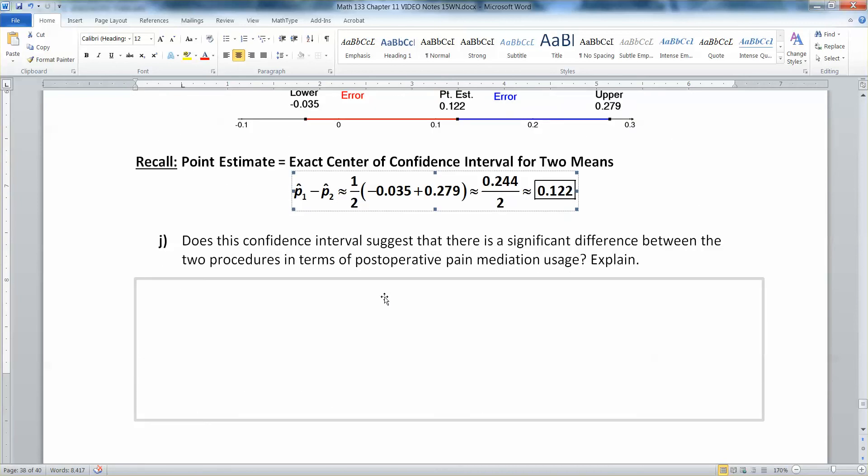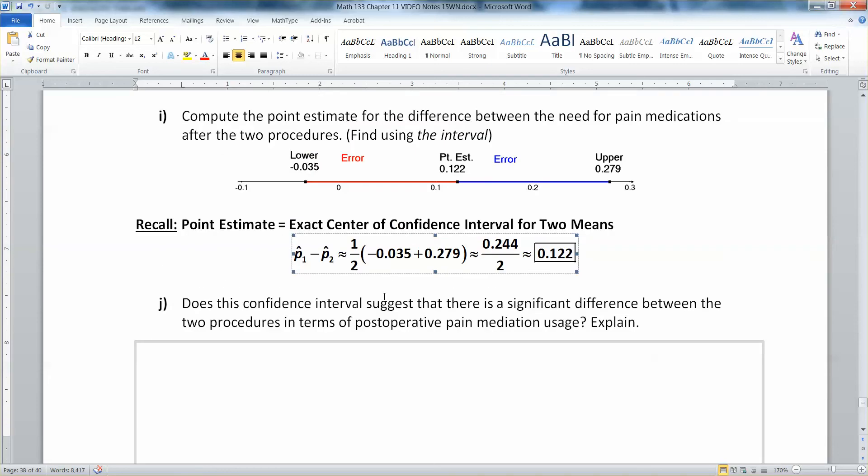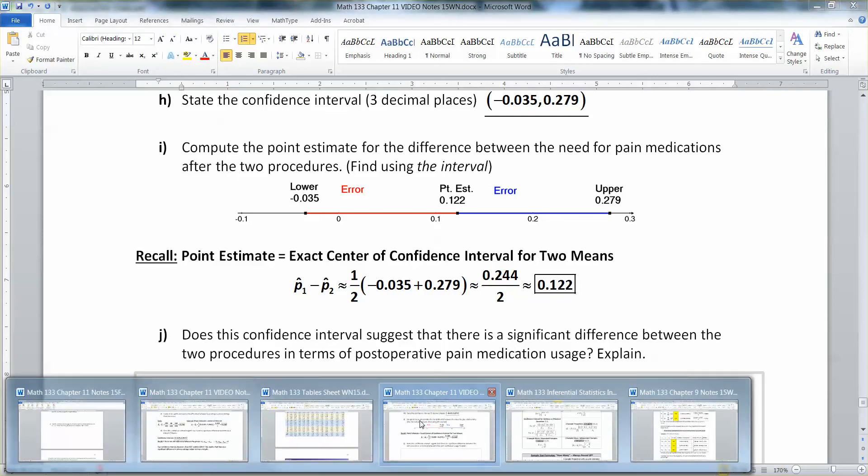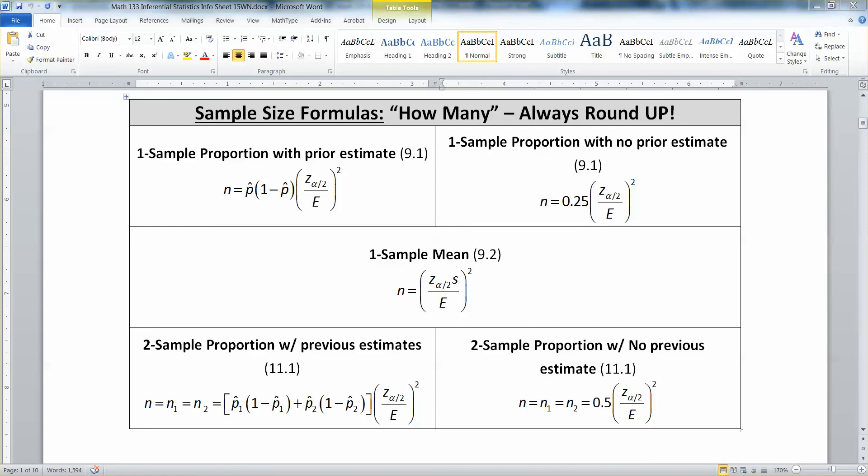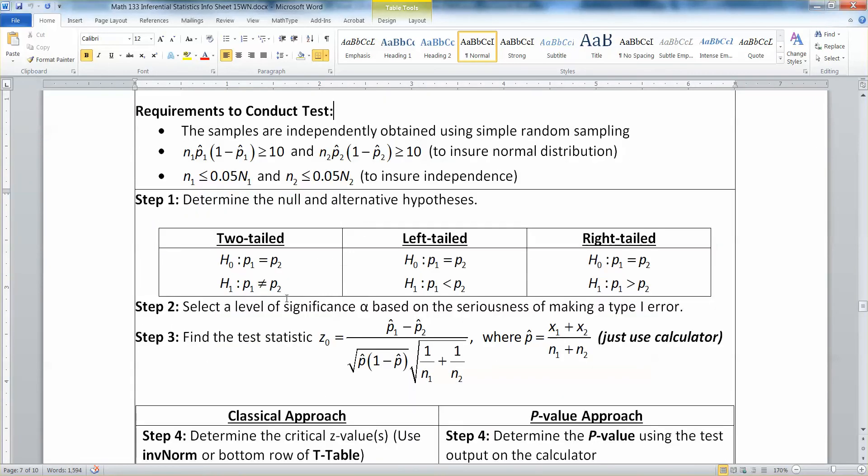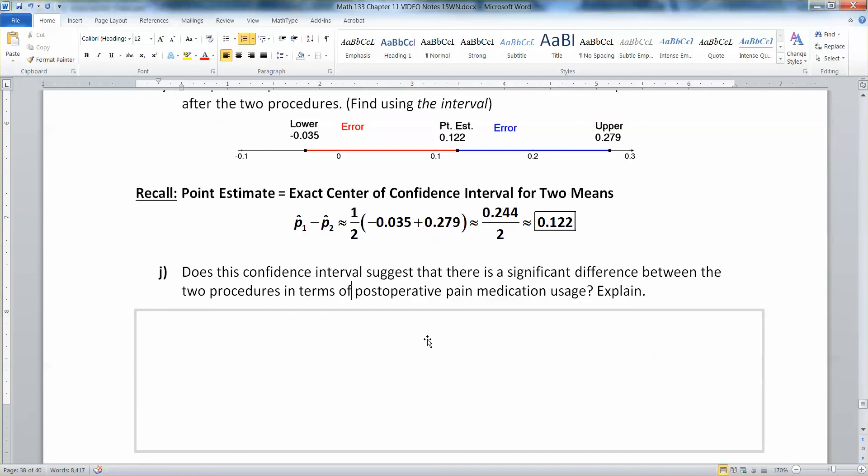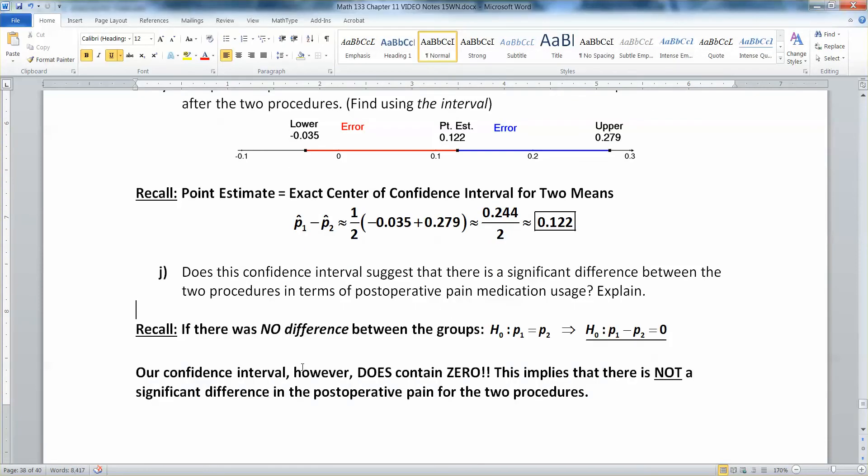Now does this confidence interval suggest that there is a significant difference between the two procedures in terms of post-operative pain medication usage? The answer to that is no, not really. Because if there was going to be a significant difference, then 0 would not be in the interval. But 0 is in the interval. If I go back to look at the inferential statistics sheet, here's the 2-prop Z test that we're looking at here. You can see that the null hypothesis is always that P1 is equal to P2. And if that's the case, then when you subtract them, you'll always have 0. 0 is right here in the middle of our interval. And since 0 is in the interval, that implies there is not a significant difference, because we're not able to disprove this null hypothesis that we assume to be true. If you want to be significantly different from 0, then 0 shouldn't be in your interval.